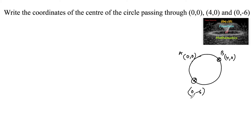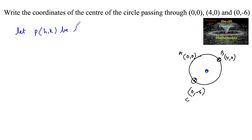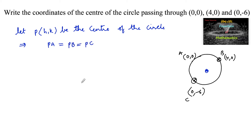So these are the three points A, B and C. We need to find the center of a circle. Since we know that the distance from the center to any point on the circle is equal, let P(H,K) be the center of the circle. So PA is equal to PB is equal to PC — the distance from P to A is the same as the distance from P to B and the distance from P to C, as per the definition of a circle.